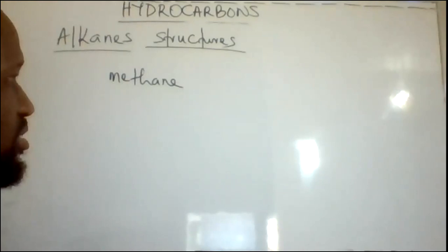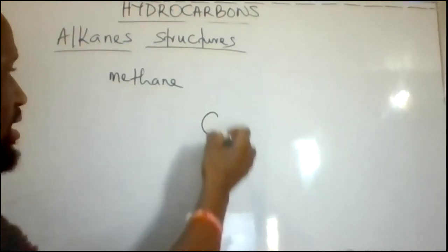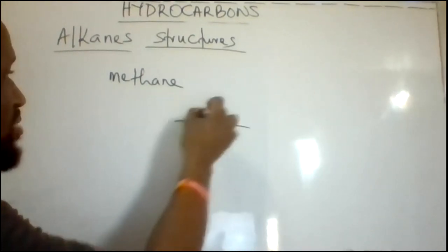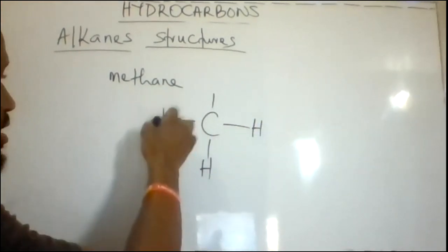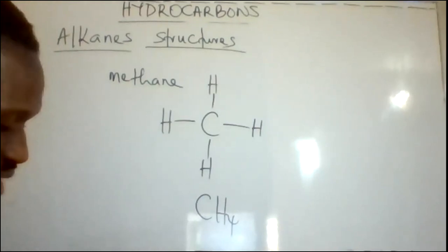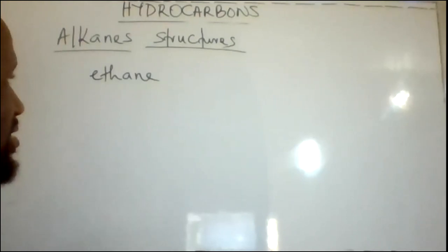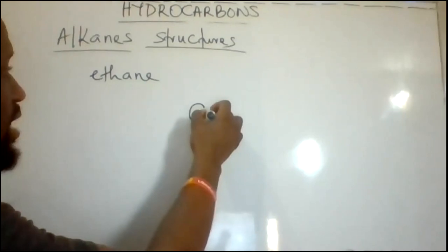How do we draw the structures for alkanes? The simplest alkane is methane, which has one carbon atom. The carbon atom has a valency of four, so we put four bonds around this single carbon atom and bring hydrogen atoms around it. This gives us CH4, the first member of the alkane series. Alkanes are saturated hydrocarbons, meaning they contain only single bonds.